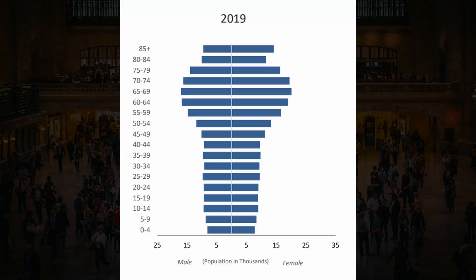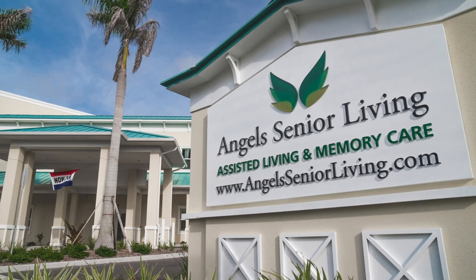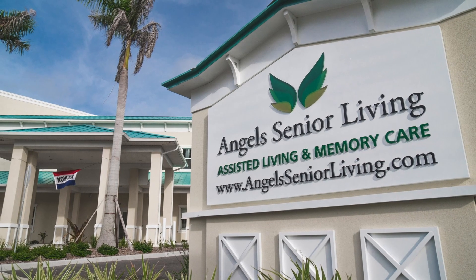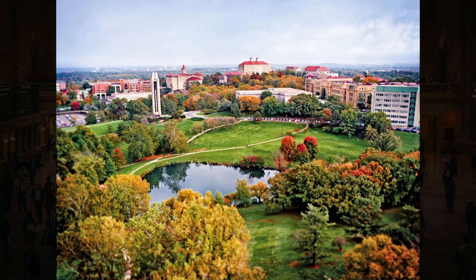Let's now look at Sarasota, Florida, which was deemed the best retirement city in the United States. You'll notice a greater number of older people in the city due to the number of people retiring there. Compare that to Lawrence, Kansas, a college town, and you'll see a significantly larger population in the 18 to 24 range because of the University of Kansas.